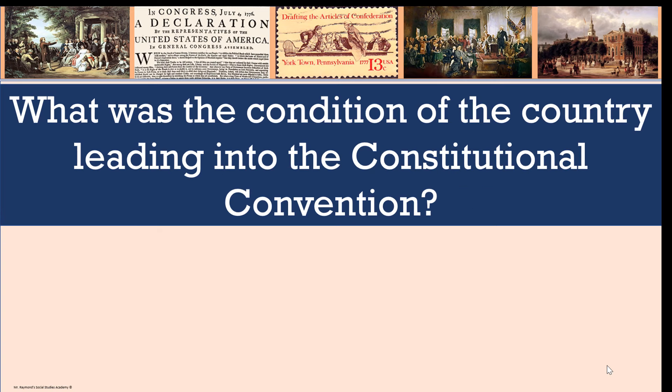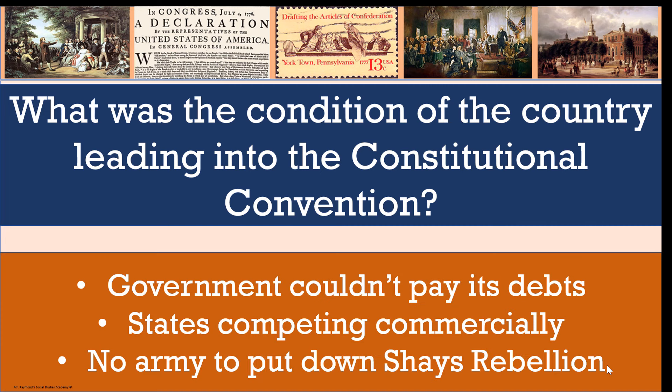What was the condition of the country leading into the Constitutional Convention? The government was basically broke. States were competing against each other commercially. And there was no army to put down Shays' Rebellion — why? They couldn't pay for one.